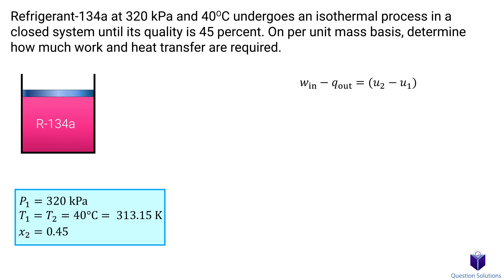Looking at this equation, if we can get u₁, u₂, and q, we can solve for work input. u₁ and u₂ can be found using property tables. To get the heat transfer q, remember that this is an isothermal process, so we can use the equation q = T₀·(s₂ - s₁). Delta s is just the difference between entropy values. All we need are the entropy values from a property table, since T₀ is the temperature that doesn't change — 40°C.